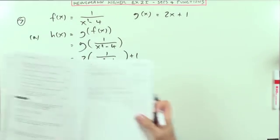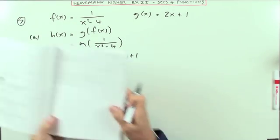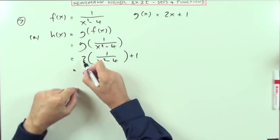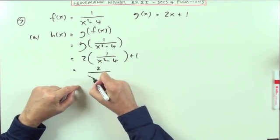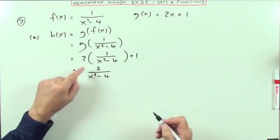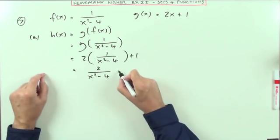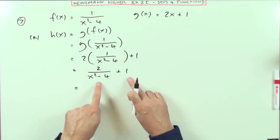Now it's said here, give your answer as a single fraction. Well, first of all I've got 2 times that, so that's going to be 2 over x squared minus 4, because you just multiply the numerators together, plus 1. Now to make that a single fraction...